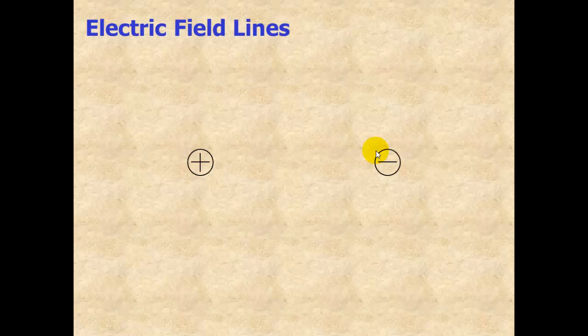If we have two charged objects, a positive and a negative, things get a little bit more interesting. This positive test charge in the middle is going to be attracted toward the negative on the right side, and repelled by the positive on the left. So the field line between these is going to point from the positive to the negative.